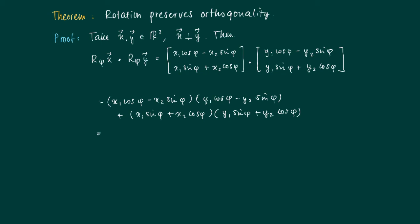We get x1 cos phi times y1 cos phi, which is x1 y1 cos squared phi. And we get x2 y2 sin phi squared.